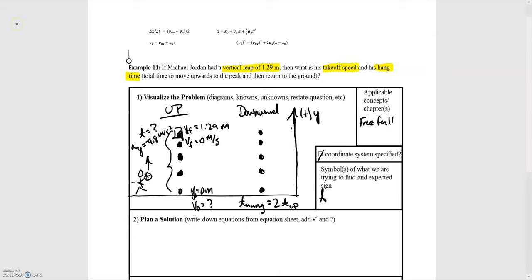We've been asked to find the hang time and we expect that to be positive and in units of seconds. We're also asked to find the takeoff speed. So that's the magnitude of the initial velocity. We expect that to be positive and have units of meters per second.